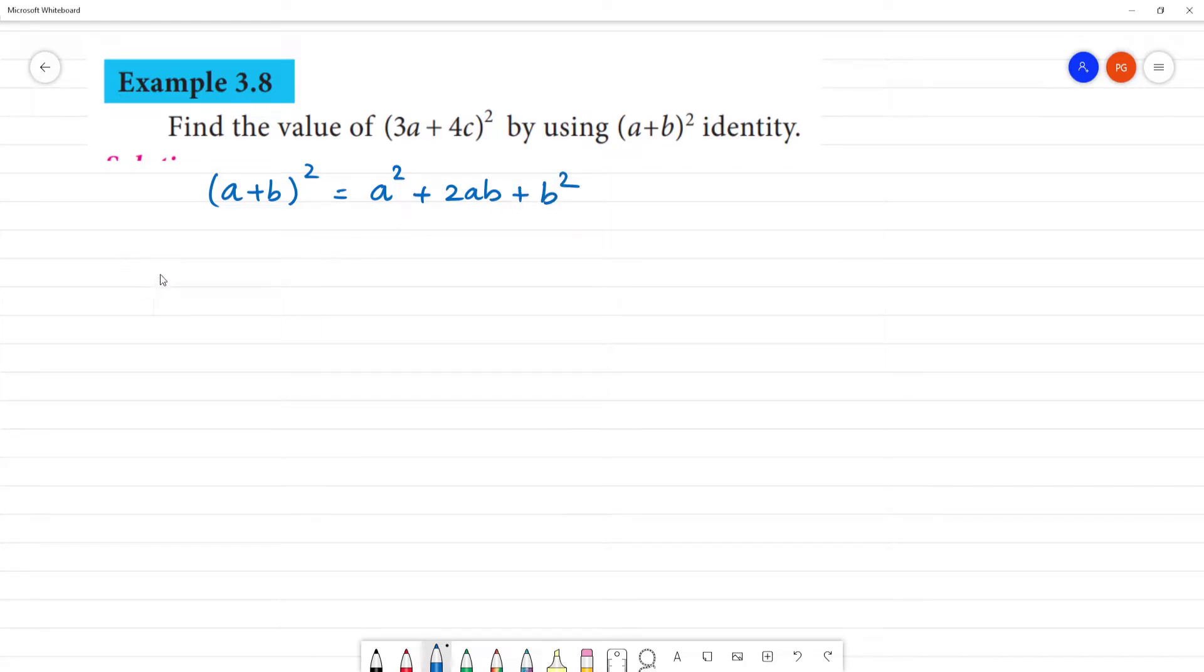Okay, so what do we have? (3a + 4c)² the whole square.